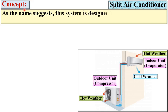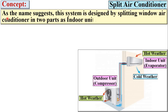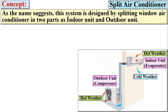As the name suggests, this system is designed by splitting a window air conditioner into two parts: the indoor unit and the outdoor unit. Here you can see this one is the indoor unit and this one is the outdoor unit. That's why it is called a split air conditioner.